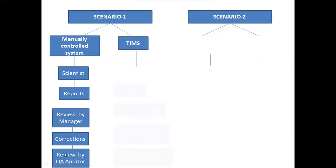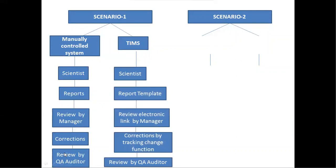On the other hand, if TIMS is implemented, the process is very simplified. The scientist prepares documents using various report templates, and the draft report is sent to the manager through an electronic link. The manager clicks the electronic link, reviews the document, and makes necessary corrections using tracking change functionality. This functionality tracks who is making corrections. The final document goes to the quality assurance auditor for filing, taking much less time and being more efficient and accurate.